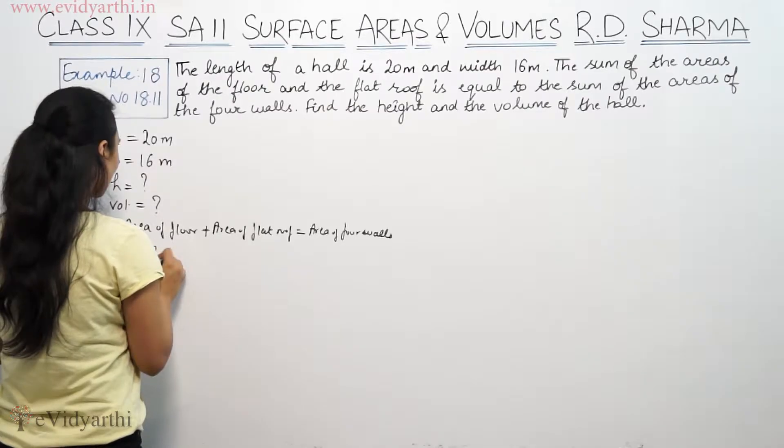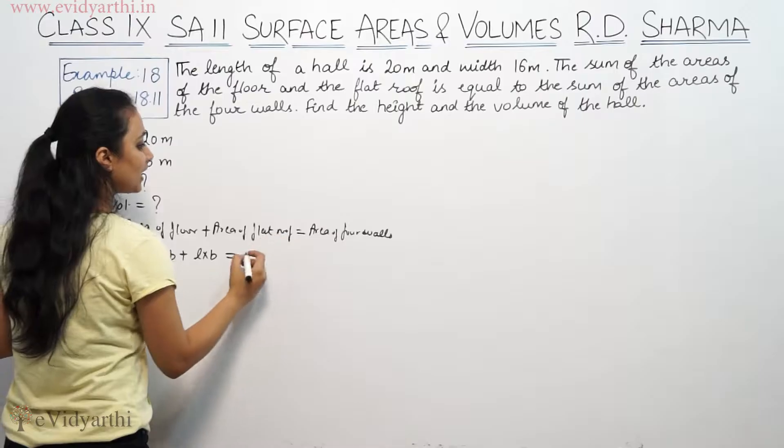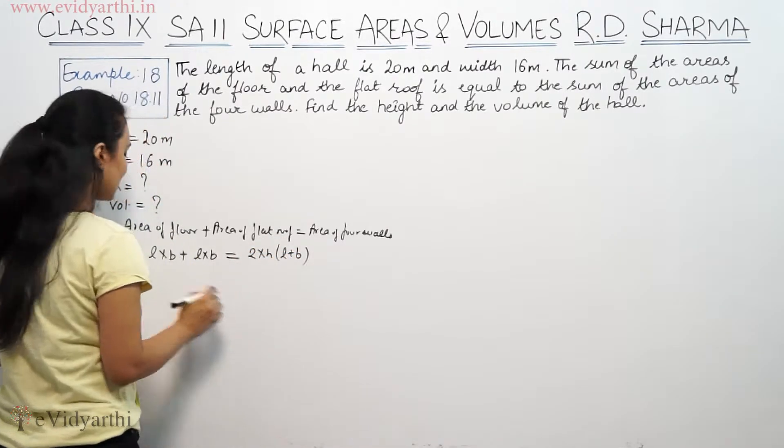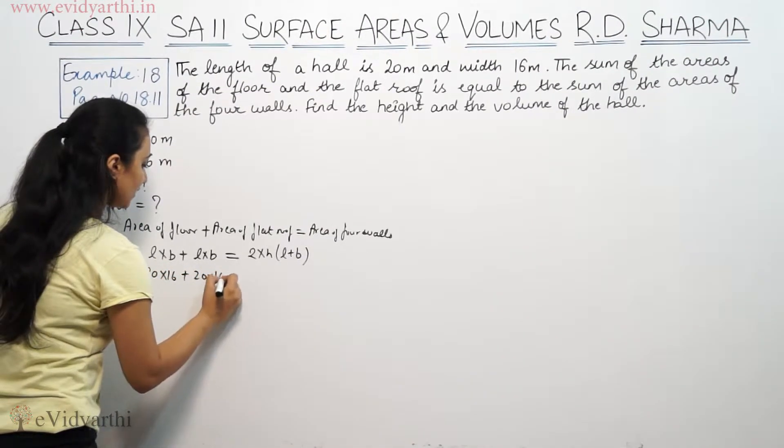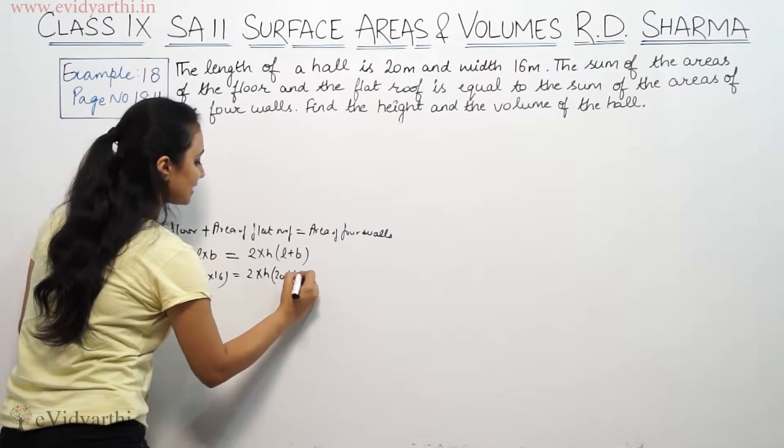So, area of floor is L into B. Area of flat roof is L into B. For 4 walls it's 2 into H times L plus B. That means, 20 into 16 plus 20 into 16 is equal to 2 into H times 20 plus 16.